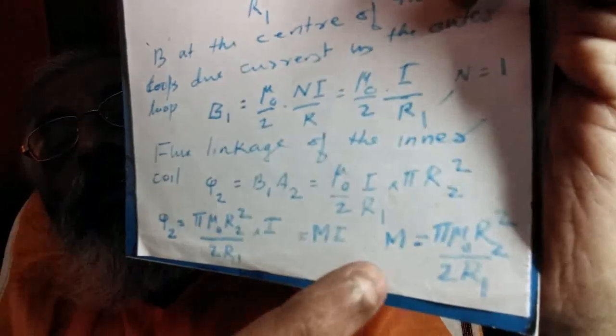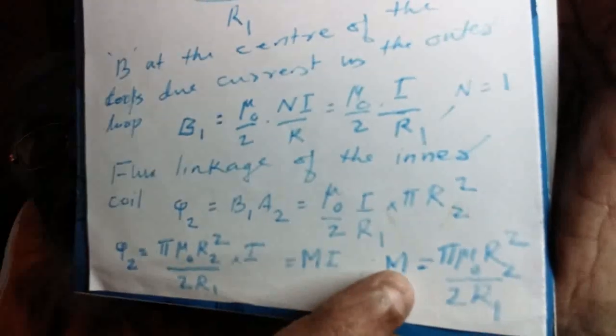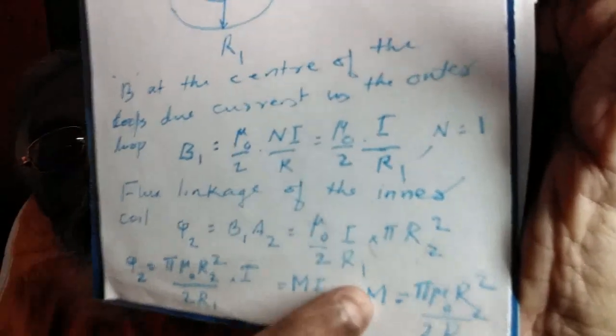Where M is π μ0 R2 square by 2R1. M is the mutual inductance between the two loops. So, this is the answer.